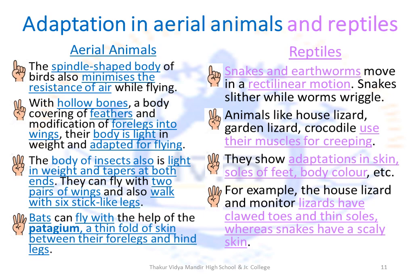Let's tackle aerial animals first. Their spindle-shaped body minimizes the resistance of air, which helps birds fly — this tapering shape inspired the design of aeroplanes. With hollow bones, a body covering of light feathers, and four legs modified into wings, the body of birds is light and adapted for flying. The body of insects is also light in weight and tapers at both ends — they can fly with two pairs of wings and walk with six stick-like legs. Bats can fly with the help of patagium — a thin fold of skin between their forelegs and hind legs, which we call the wing of the bat.